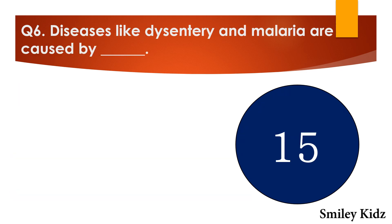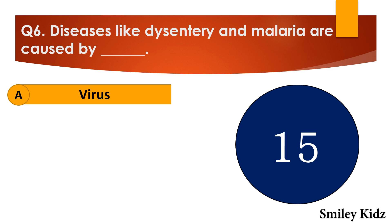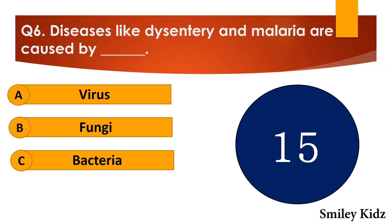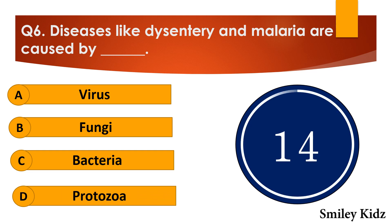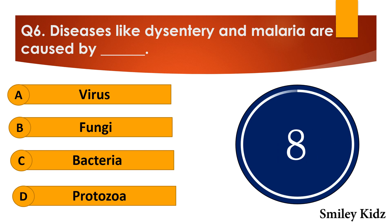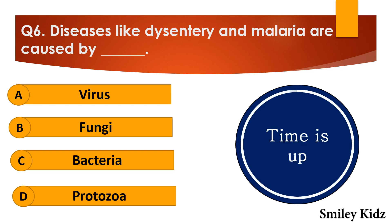Question number six: Diseases like dysentery and malaria are caused by dash. The options are: A. Virus, B. Fungi, C. Bacteria, or D. Protozoa. Your time starts now. Your time is up and the right answer is option D — protozoa. Diseases like dysentery and malaria are caused by protozoa.